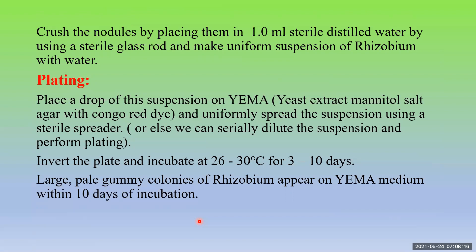Select a few nodules and place them in a test tube. Crush the nodules in 1 to 2 ml sterile distilled water with the help of a sterile glass rod gently and make a uniform suspension of Rhizobium with water — a milky white suspension. This is how surface sterilization is done and now you have a suspension containing Rhizobium bacteria.